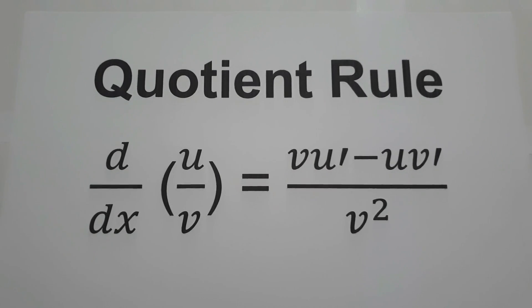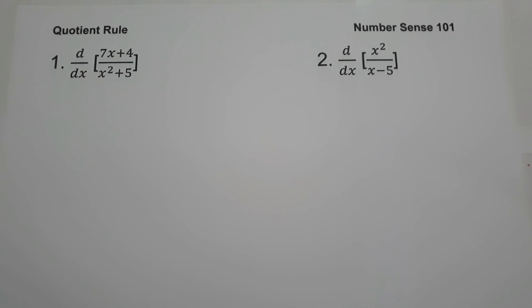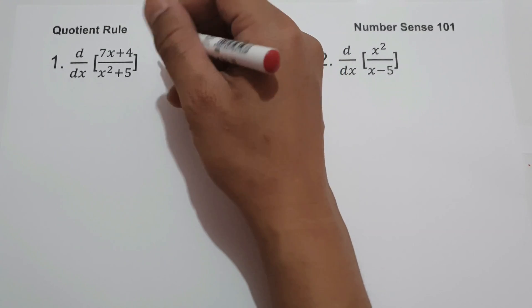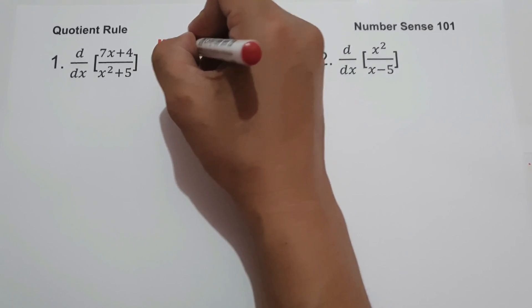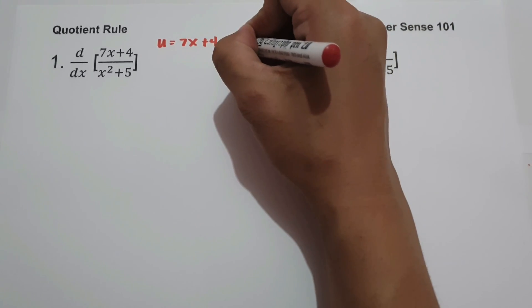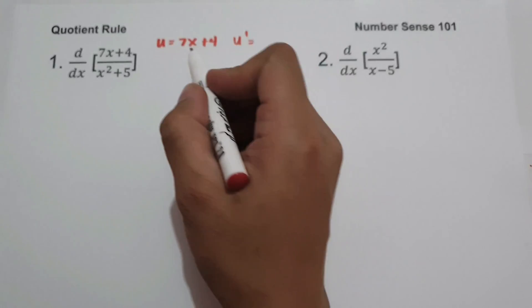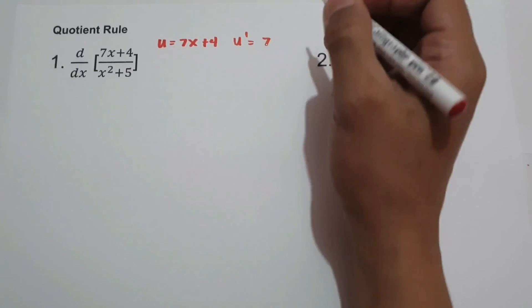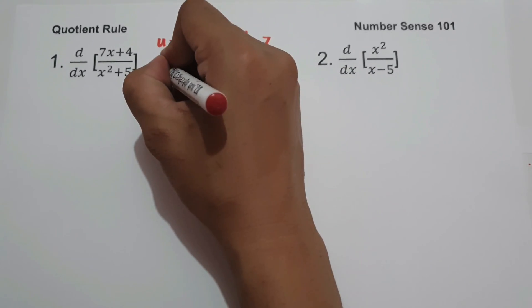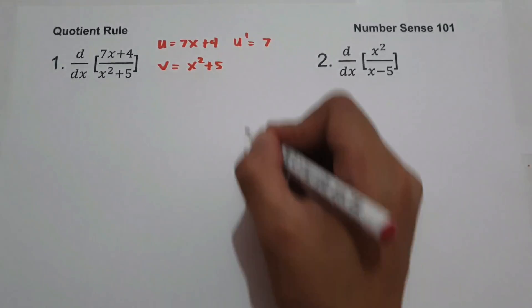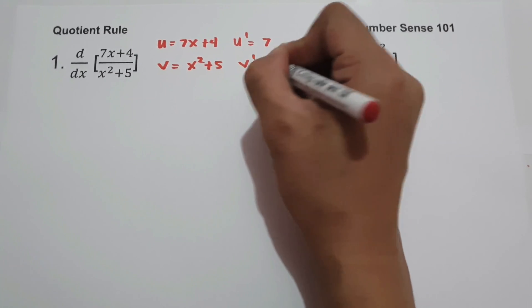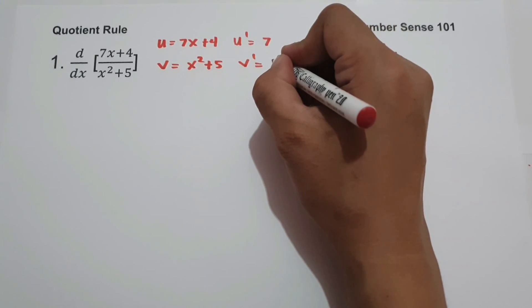Let's start with example number 1. What is the derivative of (7x + 4) all over (x² + 5)? To solve this, let us identify the values. u is the numerator, that is 7x + 4, and u' is the derivative of 7x + 4, which is 7. Then v is the denominator, x² + 5, and v' is the derivative of x² + 5, which is 2x.